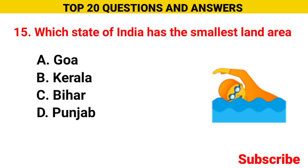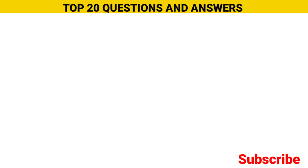Which state of India has the smallest land area? Option A Goa, option B Kerala, option C Bihar, option D Punjab. The correct option is option A, Goa.